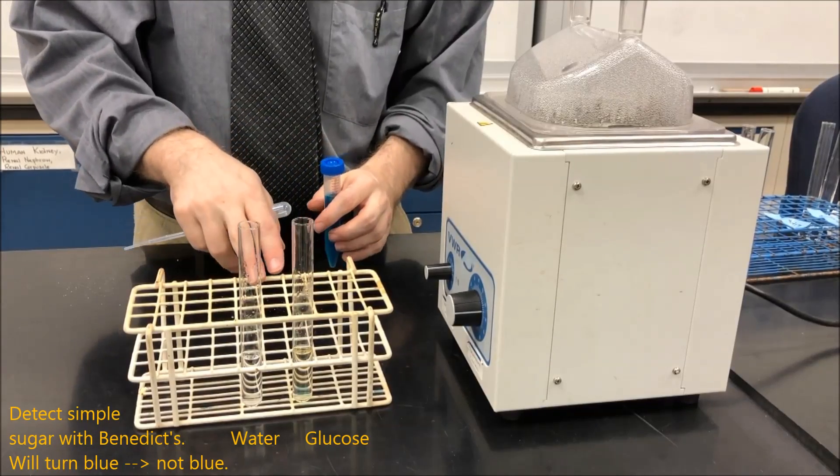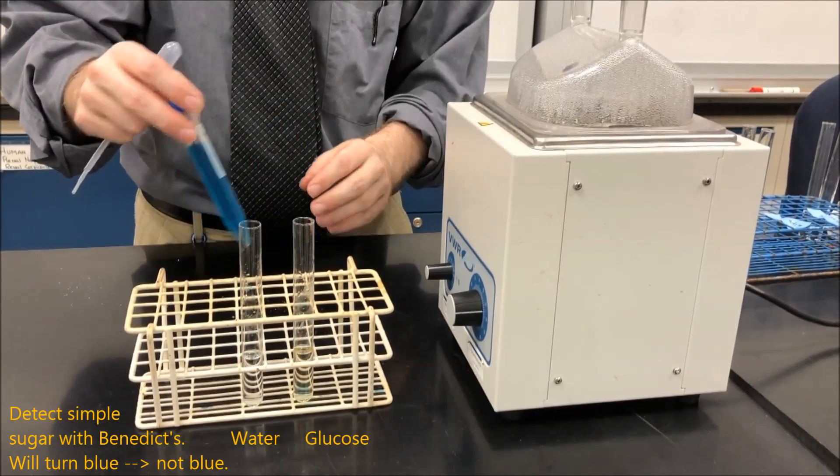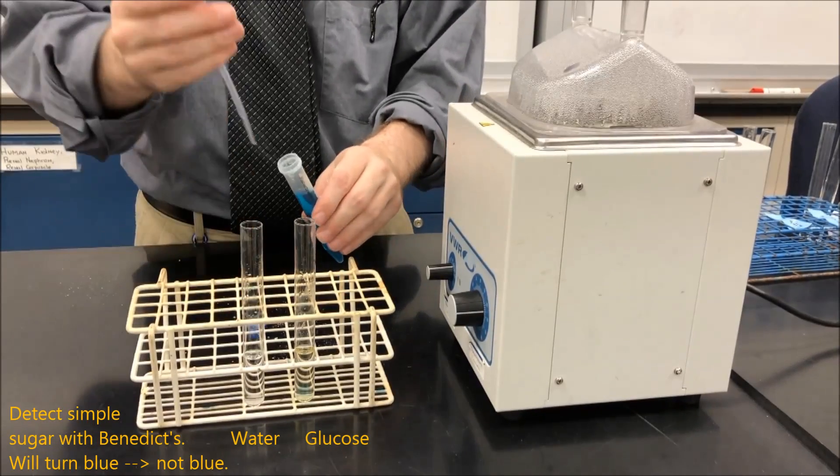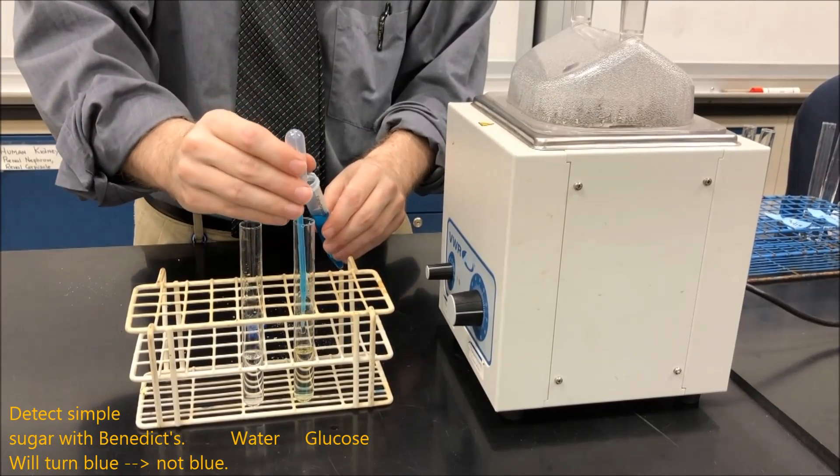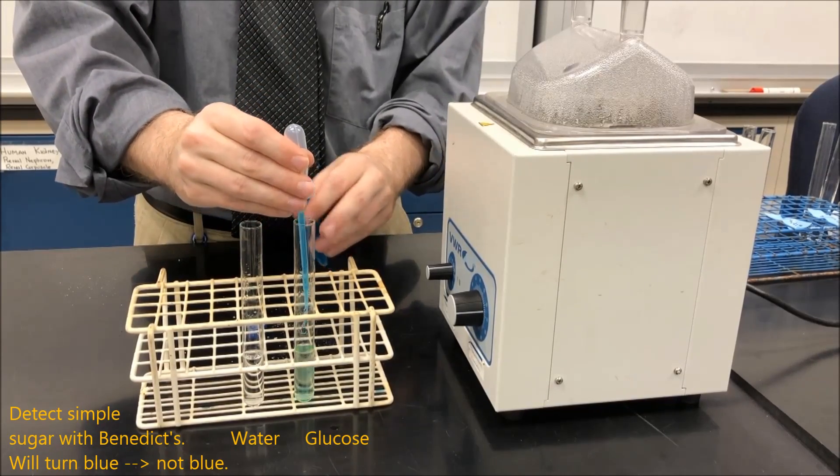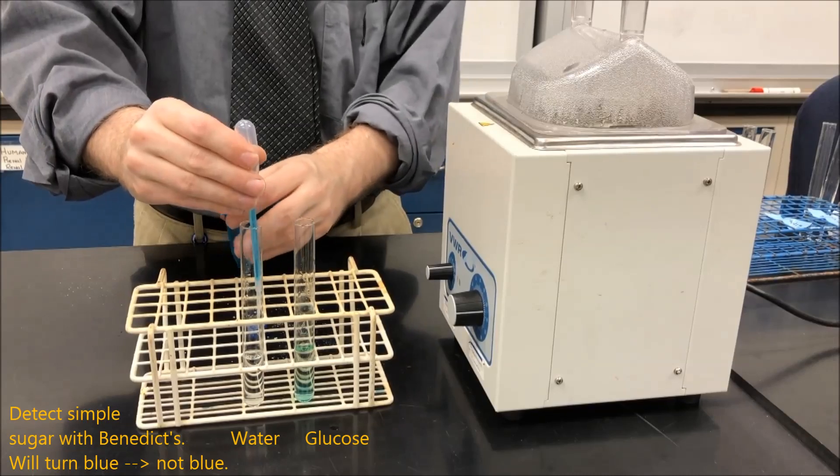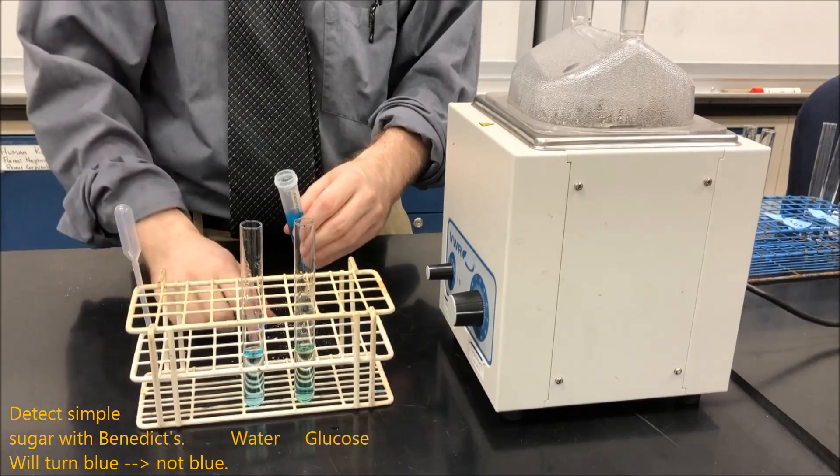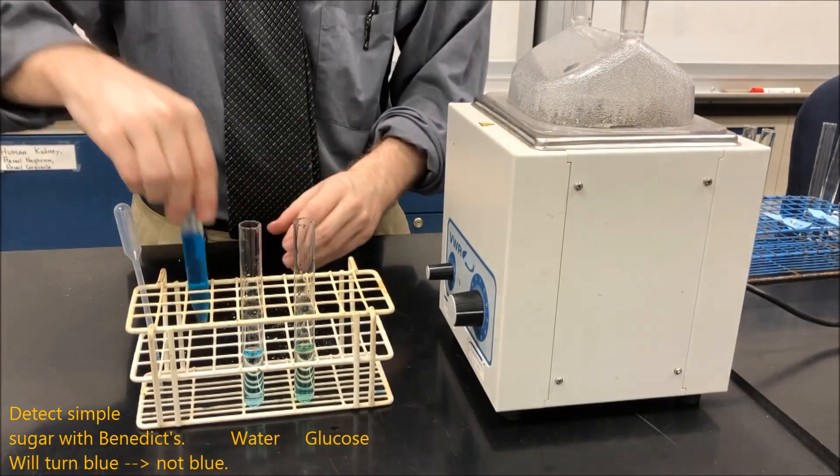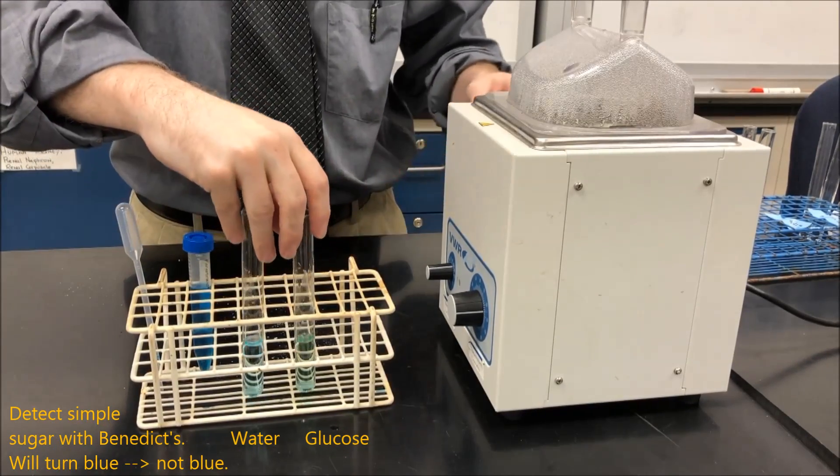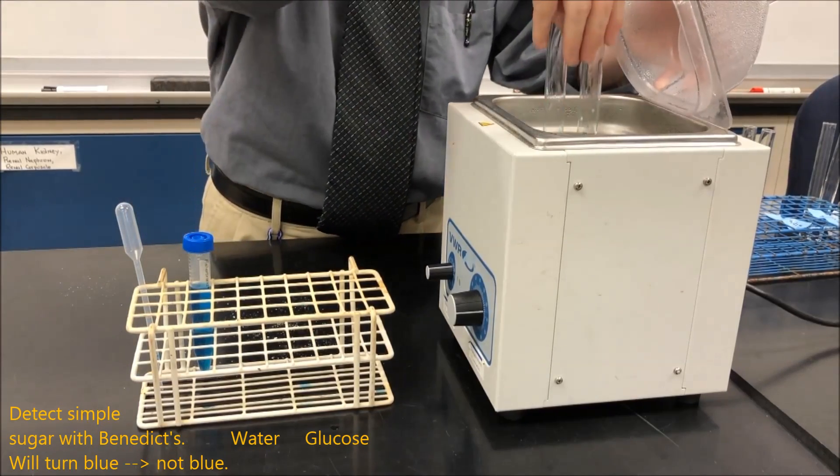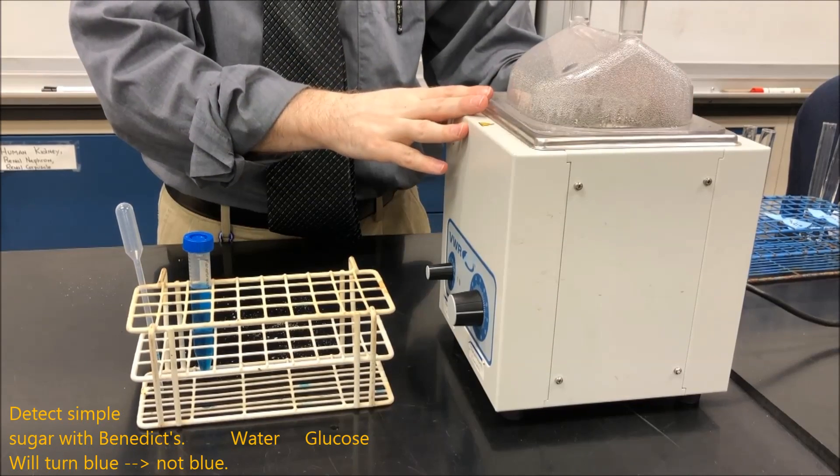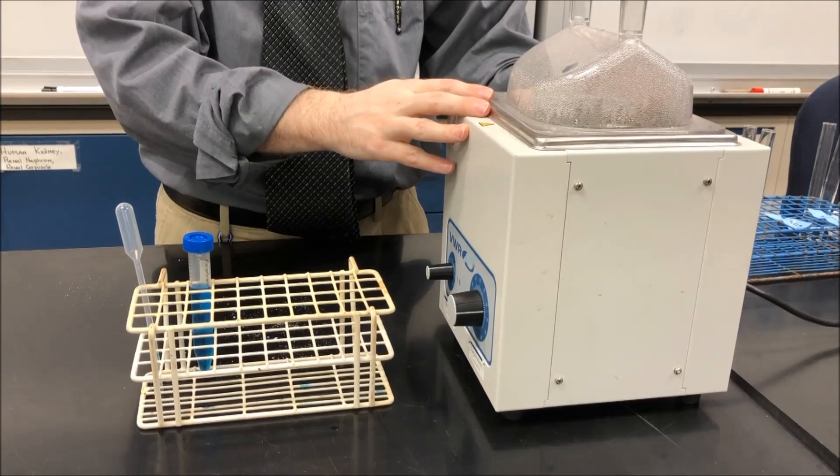To detect simple sugars, we can use Benedict's reagent. So notice Benedict's is blue in color. Going to add some to some glucose I have here, and as my control, to some water. Now Benedict's needs a few minutes to heat up. So I'm going to take my two test tubes and I'm going to put them in the water bath. And then about three to five minutes, we'll take them out and then look to see what color they've changed.